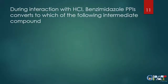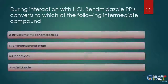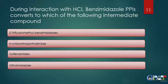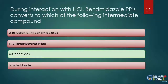The next question: during interaction with HCl, a benzimidazole proton pump inhibitor converts to which intermediate compound? The options are 2-fluoromethyl benzimidazole, N-chlorothiophthalamide, sulfenamide, or nitroimidazole. The answer is sulfenamide — during interaction with HCl, benzimidazole proton pump inhibitors convert to a sulfenamide intermediate compound.